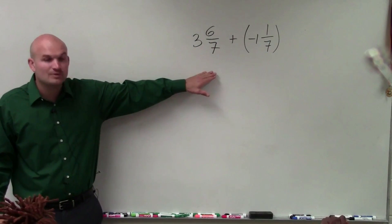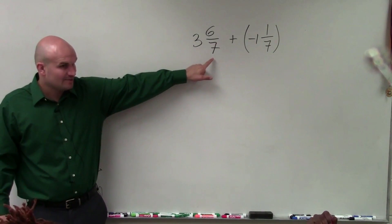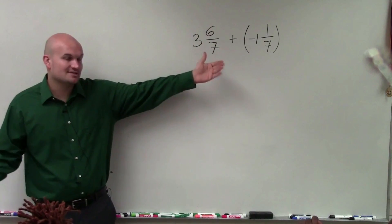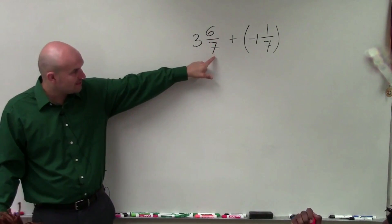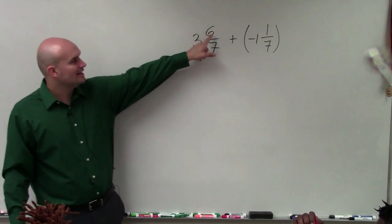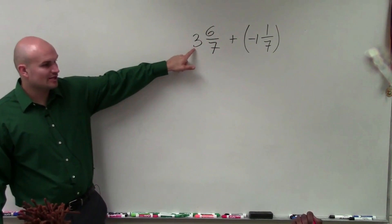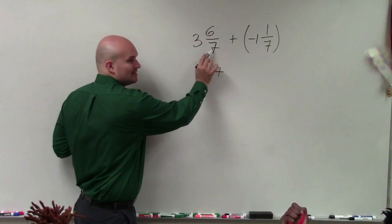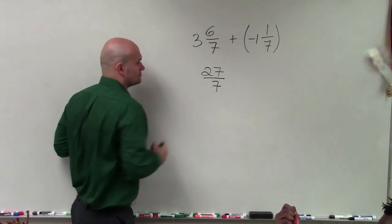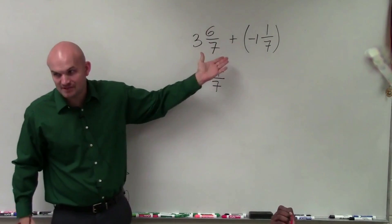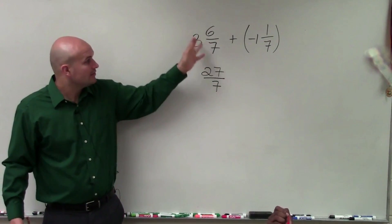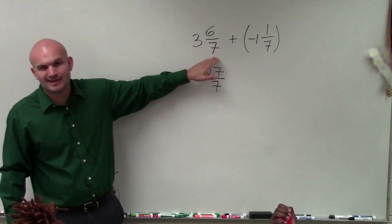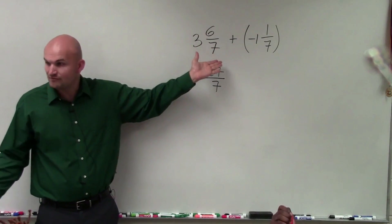When converting a mixed number to an improper fraction, you take your denominator, multiply it by the whole number, and then add the numerator. So to find the numerator of the improper fraction: 7 times 3 is 21, plus 6 is 27. So 27 is my new numerator, and I always keep the denominator the same. So 3 and 6 sevenths as a mixed number can be rewritten as the improper fraction 27 over 7, which we'll always prefer to work with.